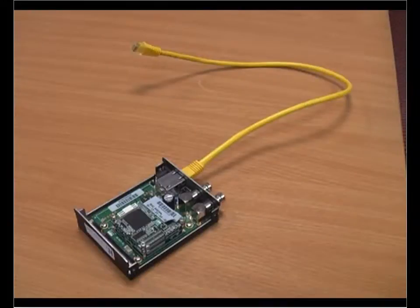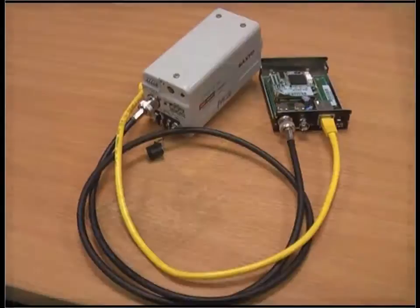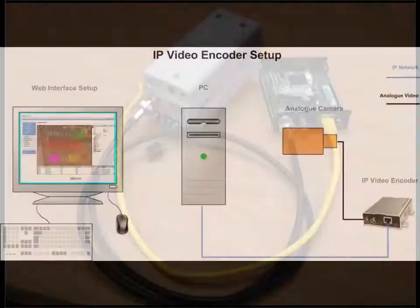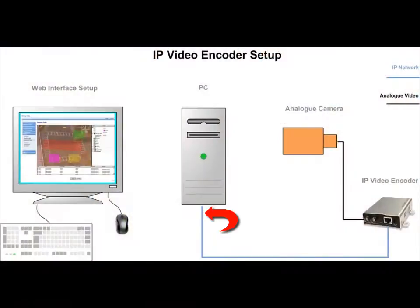The first thing to do is to connect your network cable to the unit like so. Next, take your BNC cable and connect it to your analog camera and your Video IP Encoder like so. Now you need to connect your network cable directly to the PC.